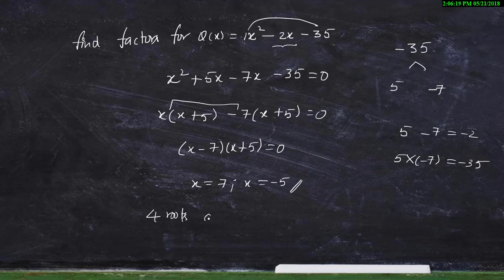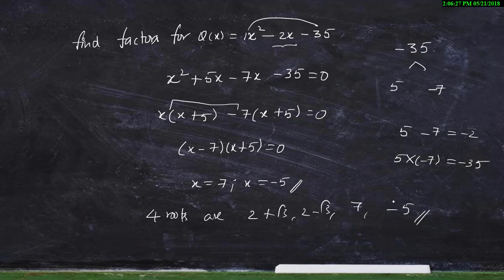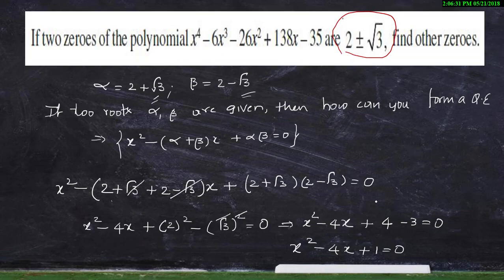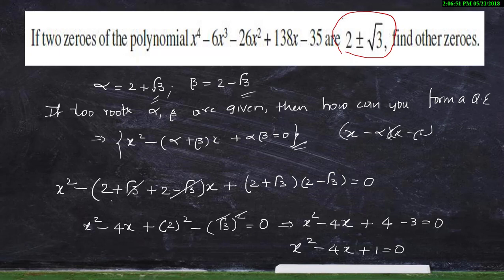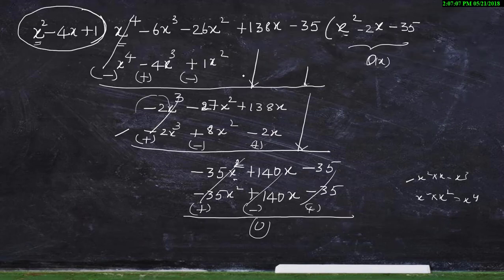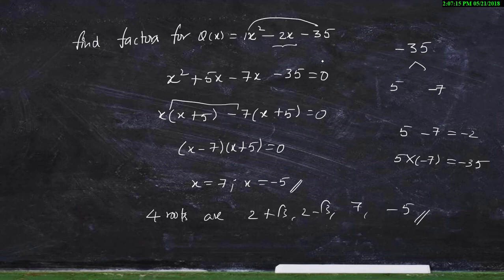So the total four roots are: 2 + √3, 2 - √3, 7, and -5. To summarize: from the given two roots, obtain a quadratic equation using the formula x² - (α+β)x + αβ = 0. Use that as the divisor and divide the big polynomial, getting remainder zero and a quotient quadratic equation. Then find the zeros of the quotient by splitting the middle term.